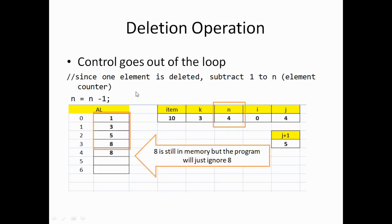When control exits the loop, we subtract 1 from N, so N becomes 4 and we now have 4 elements. The value 8 still exists in memory at the old last position, but the program ignores it since N has been decremented. That is how the delete operation functions.